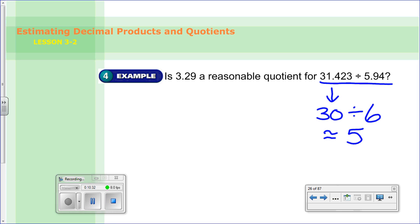So your answer should be about 5. So you look at this. Is that close enough to 3.29? And in this case, I'd say no. Because it would make sense if it was about 4.8, 4.9, something like that. But 3.29 is pretty far off when you're dividing. So no.